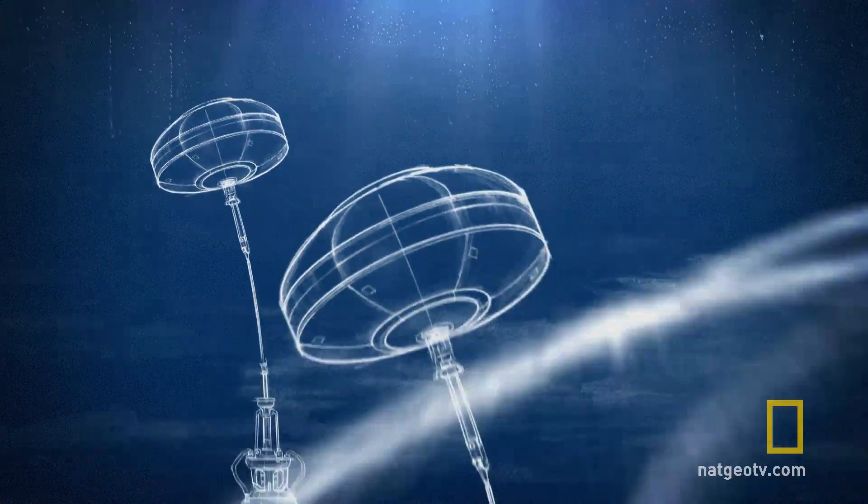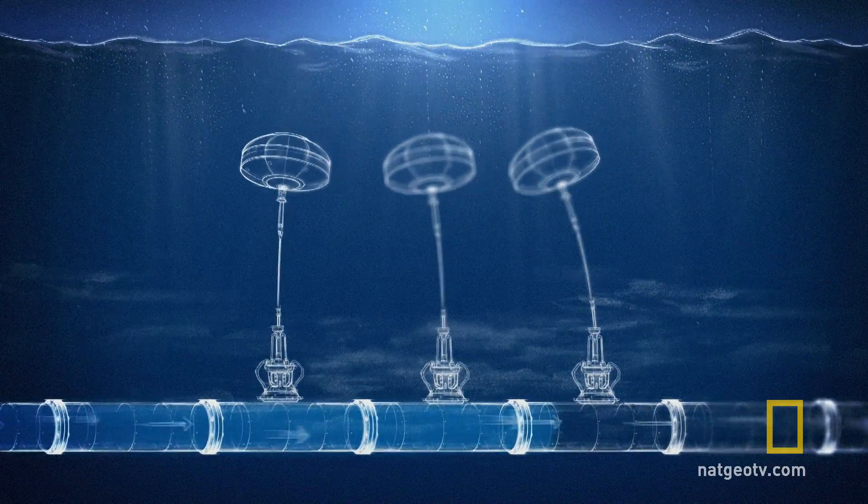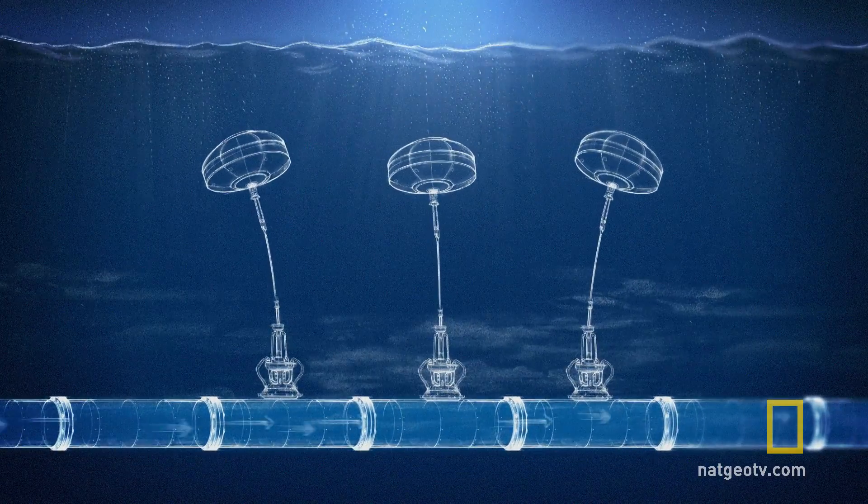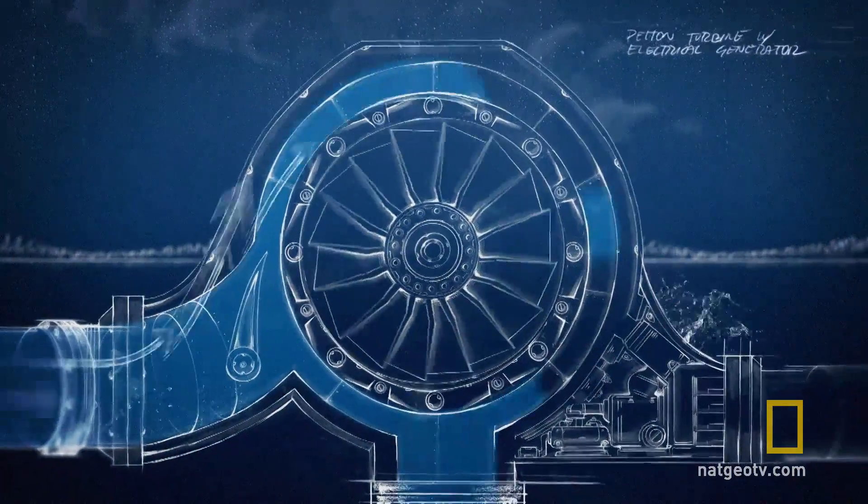Giant buoys are tethered to hydraulic pumps on the ocean floor. The buoys are continually slammed by ocean waves. That raw kinetic energy shoots high-pressure water through pipes into a powerhouse on shore.